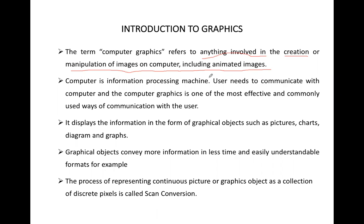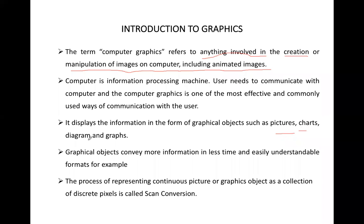So in the computer, anything you create — an image, a symbol, or something you edit — we call computer graphics. Computer graphics displays information in the form of graphical objects such as pictures, charts, diagrams, and graphs. Whatever you see on the output screen, all things in the computer are graphics. A bar, a chart, a graph, a video — for the computer, text, numbers, images, videos — all these things are graphics.